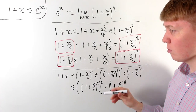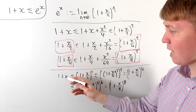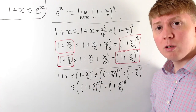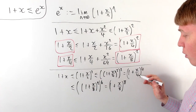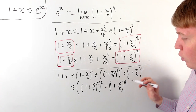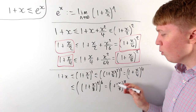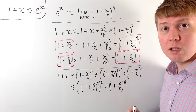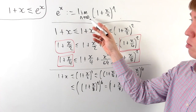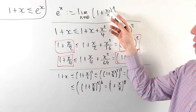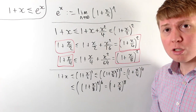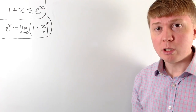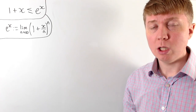At this point you might start to see the pattern emerging: 1 plus x is less than or equal to 1 plus x over 2 all squared, which is less than or equal to 1 plus x over 4 all raised to the power of 4, which is less than or equal to 1 plus x over 8 all raised to the power of 8. We start to see the structure of the limit as n goes to infinity of 1 plus x over n all raised to the power of n.